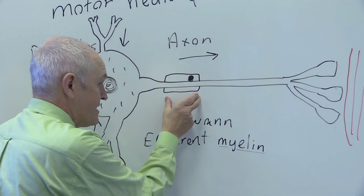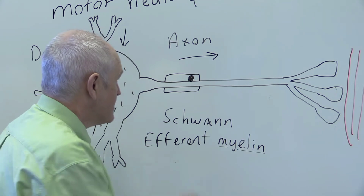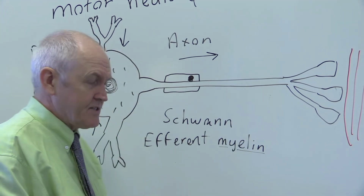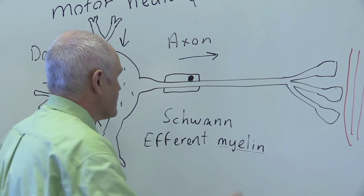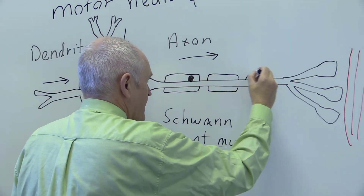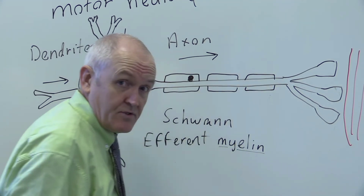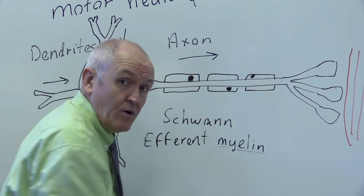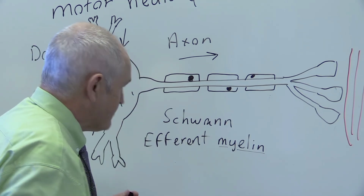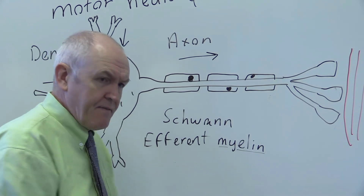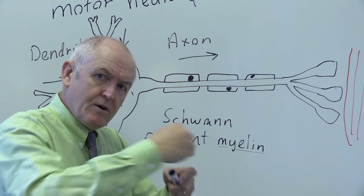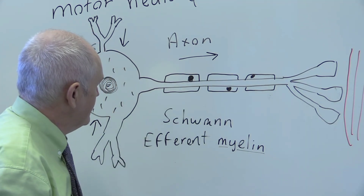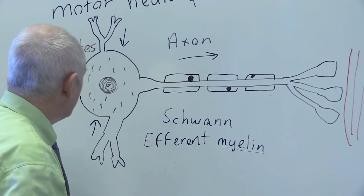Each Schwann cell is only about a millimeter long — quite big for a cell — so if you've got a long length of nerve fiber there are going to be hundreds of Schwann cells wrapping around it; potentially hundreds or even a thousand or two. All are individual cells with their own cytoplasm, nucleus, and cell membrane producing this fatty myelin. A single Schwann cell can actually wrap around the axon many tens of times.